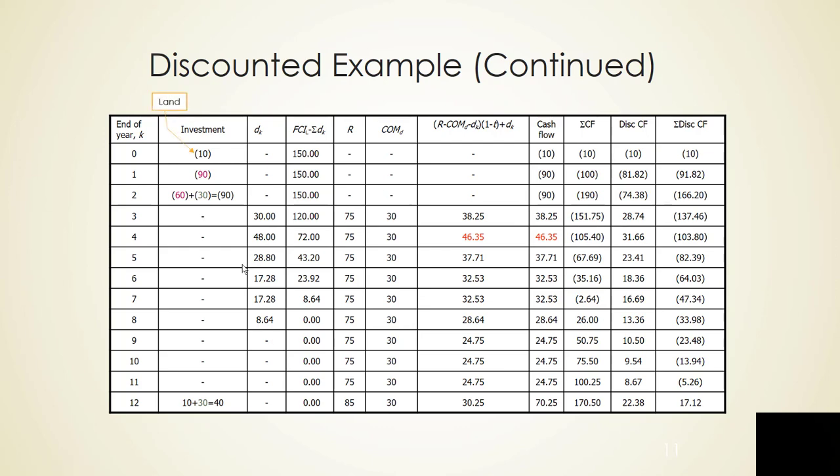So first we purchase our land, 10 million. Then we do our fixed capital investment, so another 150 million. And then we add in our working capital. So our initial investment is 190 million dollars at this point in time. Now notice that we are getting our land value back at the end as well as our working capital. So you'll see those repeated at year 12 because we are going to get that value back.